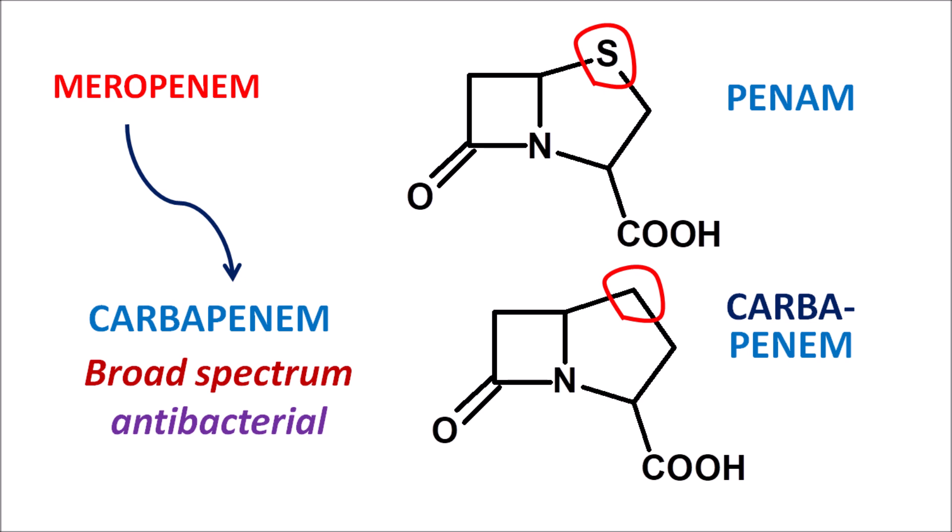Another structural difference is that in penem the name contains an 'a', whereas in carbapenem an 'e' is used. This 'e' indicates unsaturation — carbapenems have an unsaturation at this position. So carbapenems are unsaturated and have sulfur replaced with carbon.